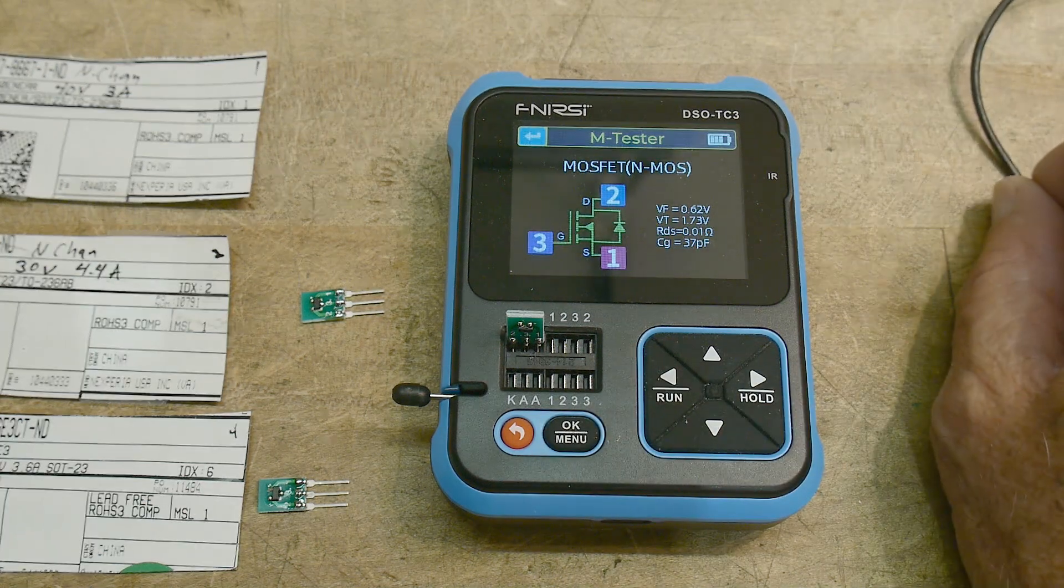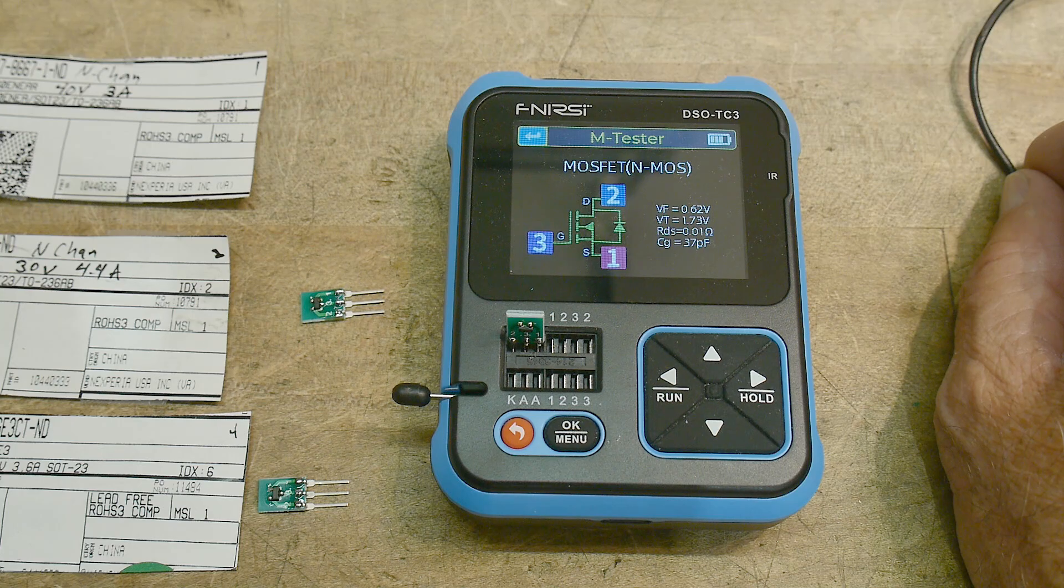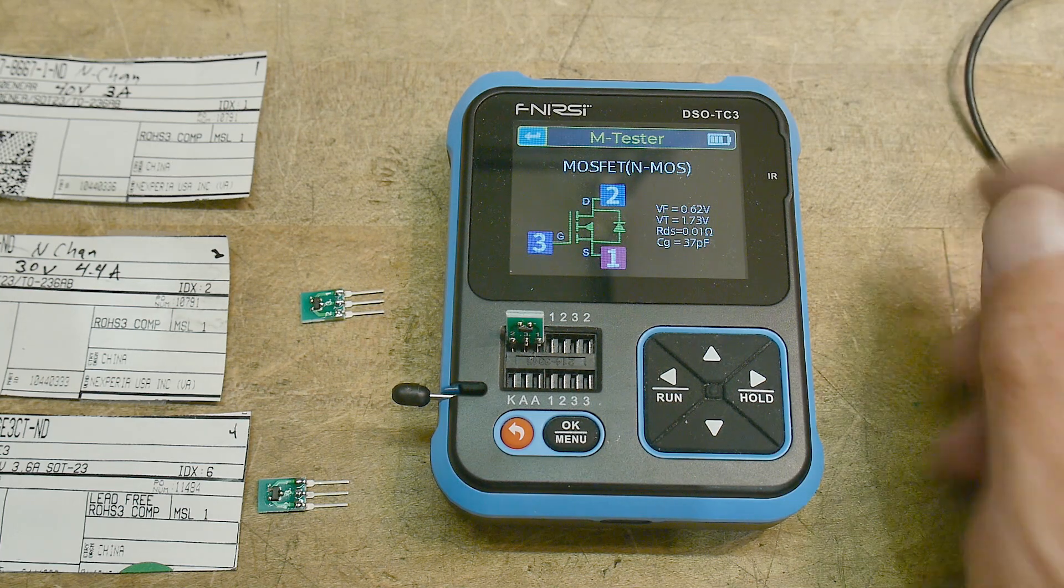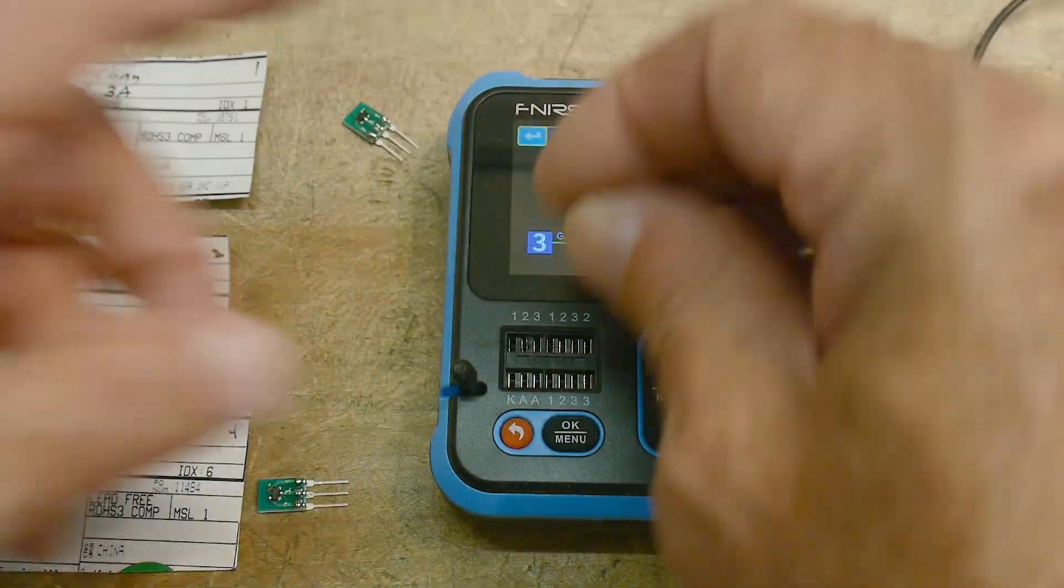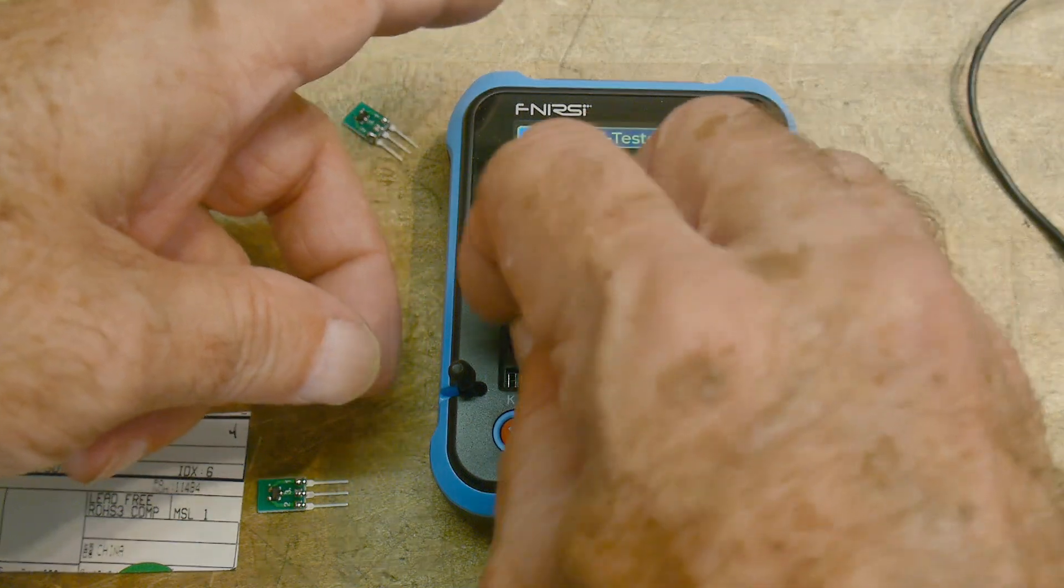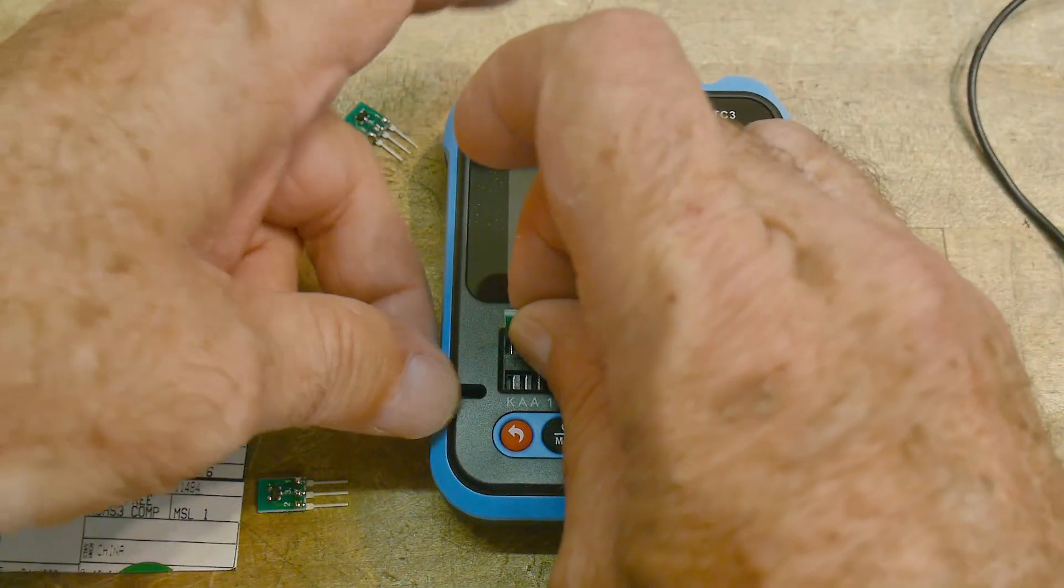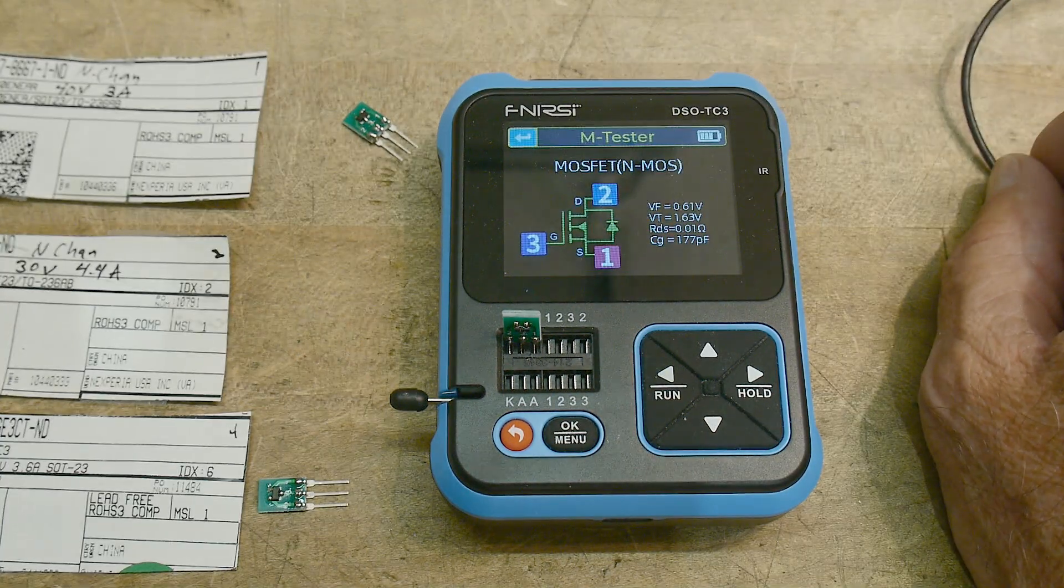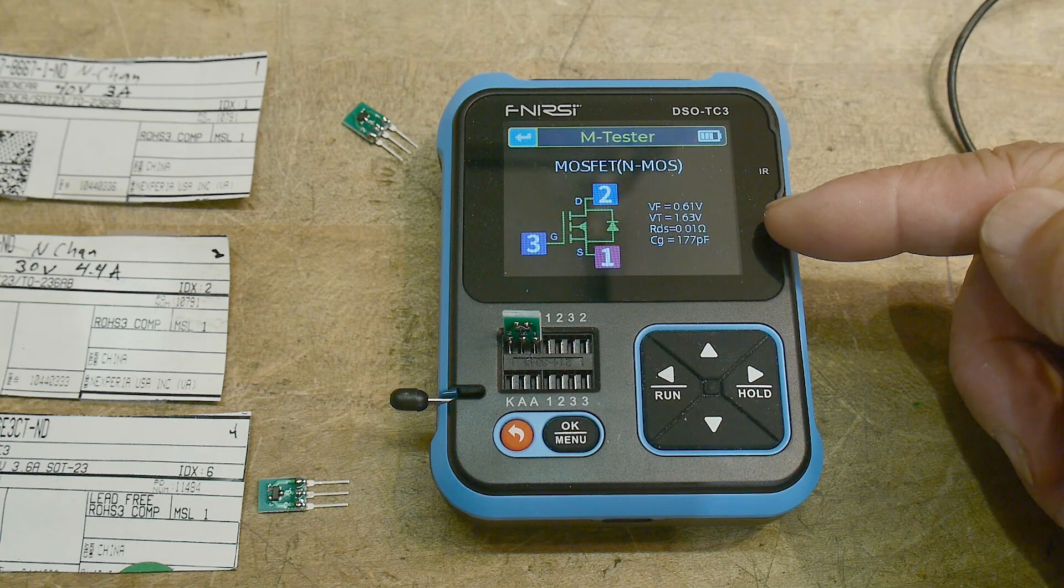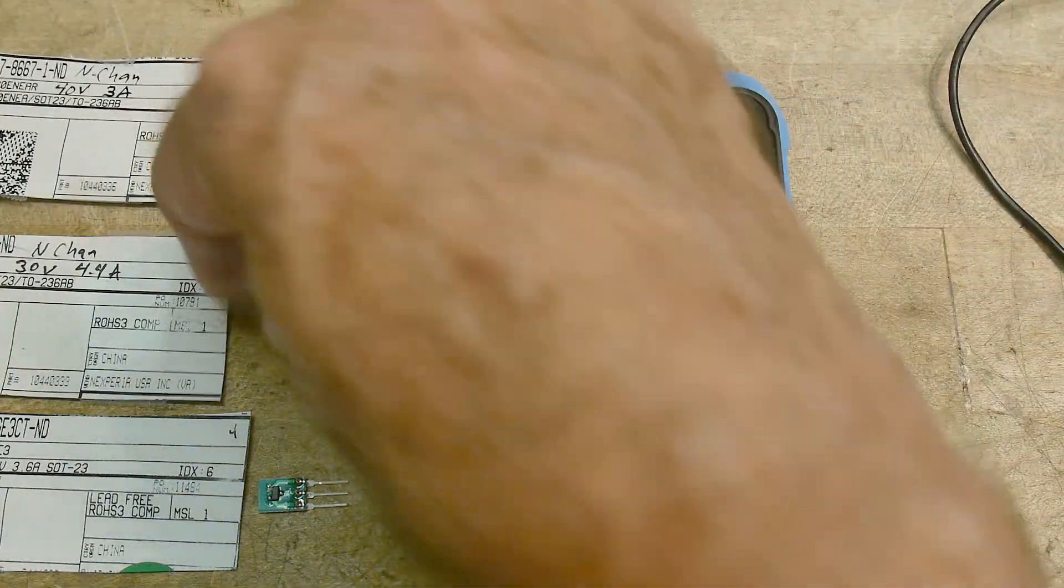And it says it's a MOSFET, NMOS. Voltage 0.62 volts, threshold of 1.73, 0.01 ohms. Okay. 0.61 volts, set 1.63 volts, 0.01 ohms. Yeah, these look like the same part, right?